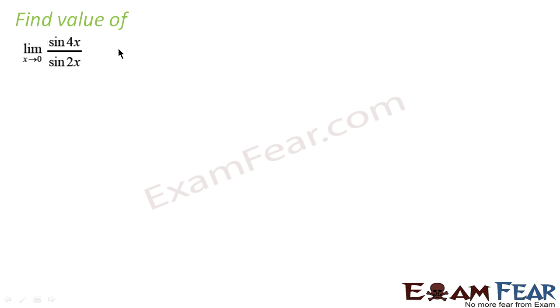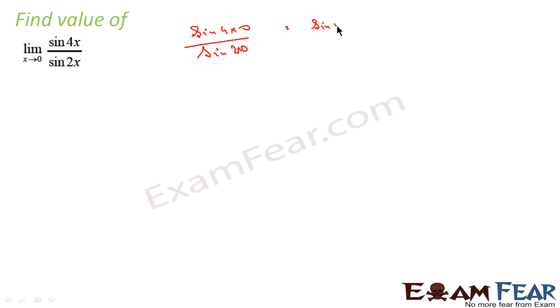Example: we have to find the value of sin4x / sin2x where x tends to 0. First thing we'll do is put x equal to 0, so we get sin(4×0) / sin(2×0), which becomes sin0 / sin0, that is 0/0. Since it is 0/0 form, we are confident that we can rewrite this equation to some form where we'll get the value.